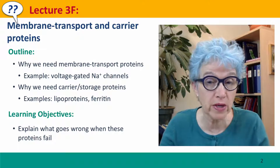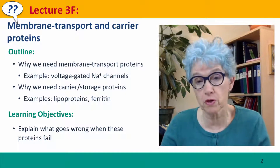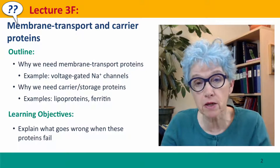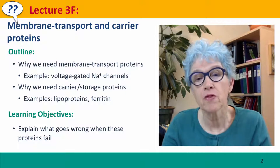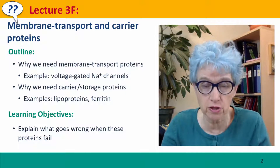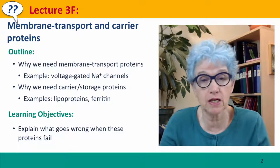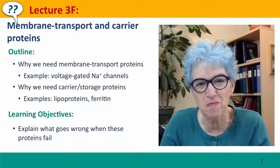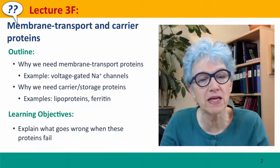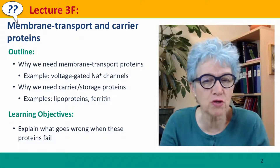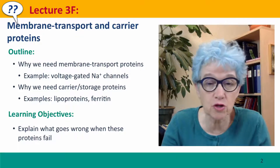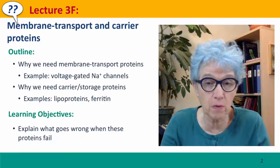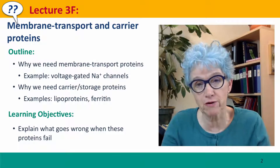First, we'll talk about why we need special proteins to transport things across membranes. We'll consider one particularly important example: the voltage-gated sodium channels that function in sending all the nervous signals that allow you to understand what I'm talking about. Then we'll talk about why we need special carrier and storage proteins, and we'll consider two examples: the lipoproteins that carry fat in our blood, and ferritin, which carries iron.